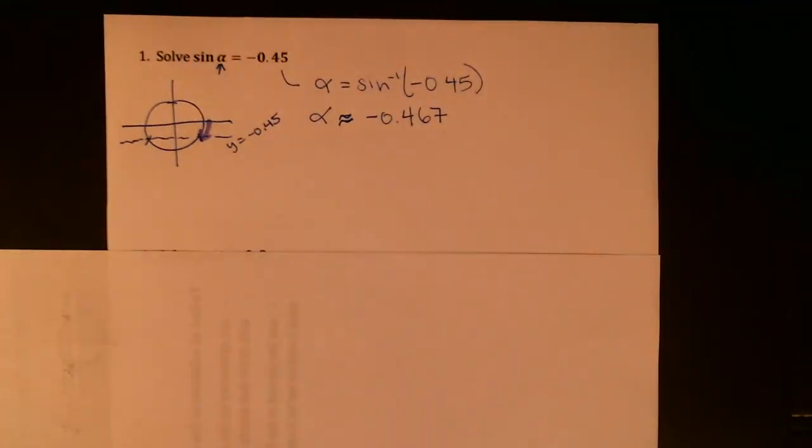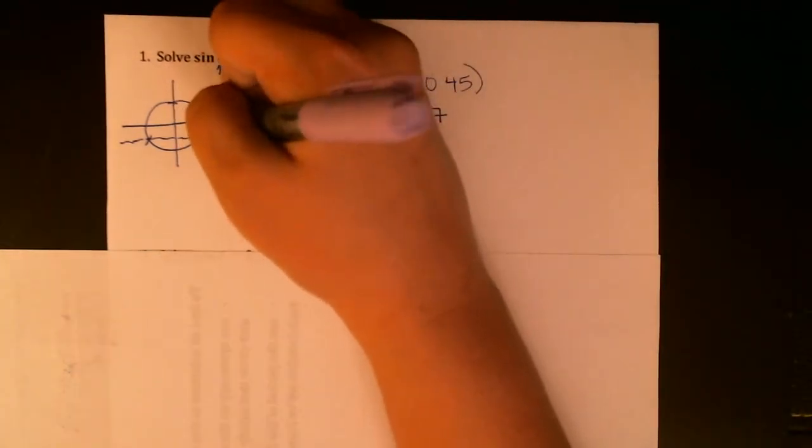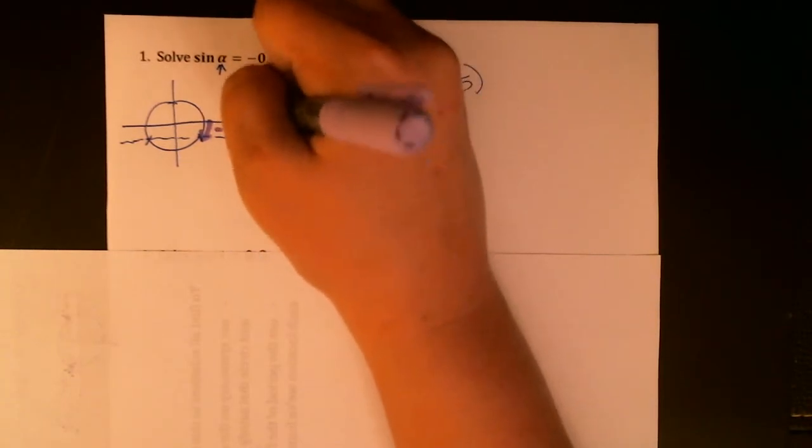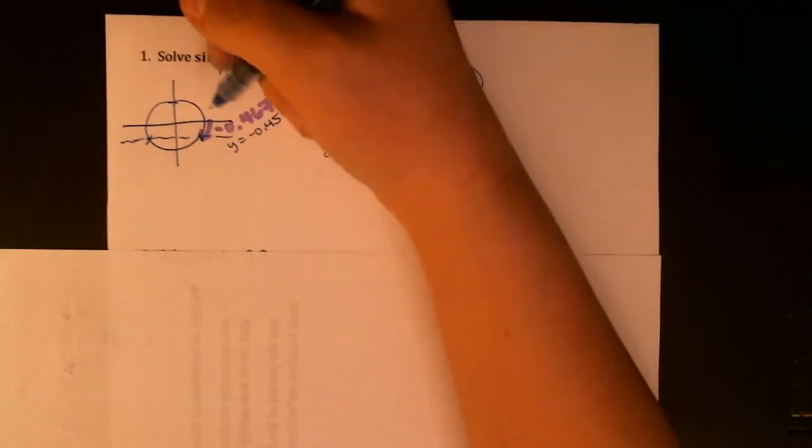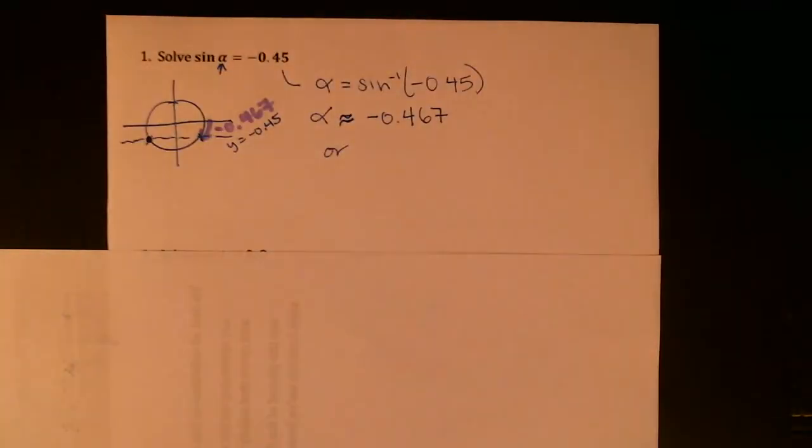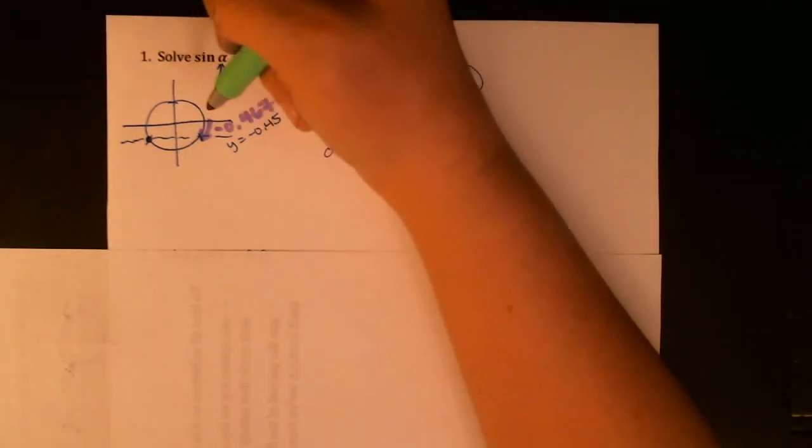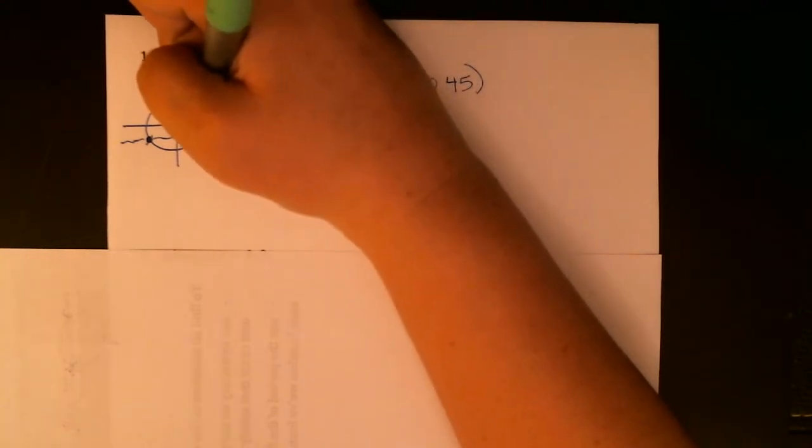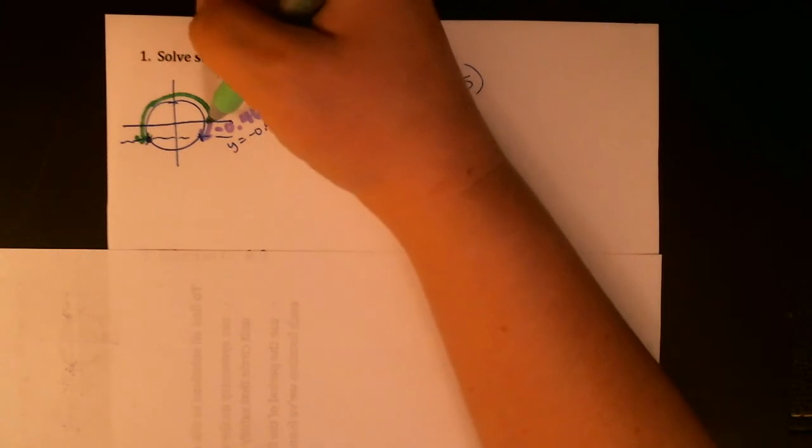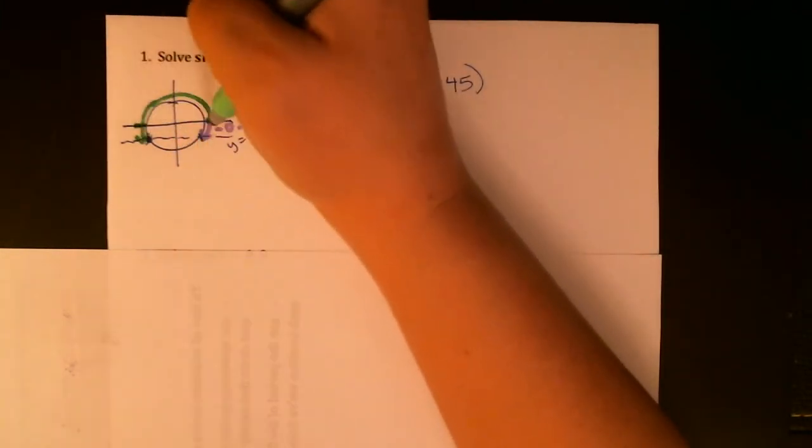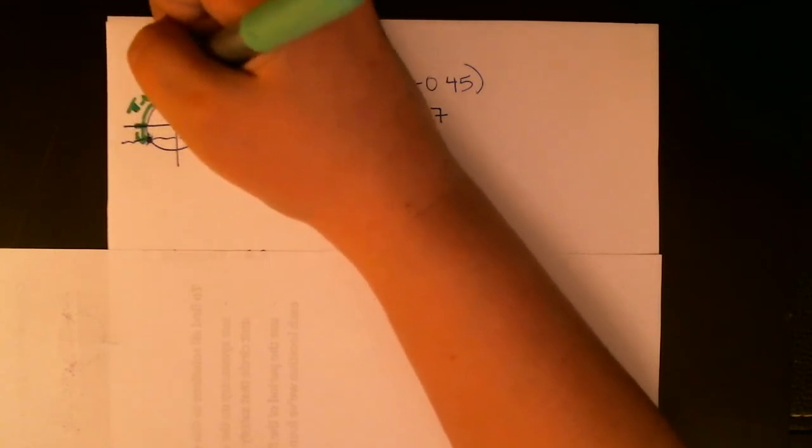So for starters, you want to ask yourself which arc length you found. We've got a small negative arc length, so that's going to be the one that lands us at the point in quadrant four, negative 0.467. This is where the symmetry comes into play. We also need to find an arc length that lands at this point over here, and your calculator is not going to give you that one. Inverse sine will always give you an arc length between negative pi over 2 and pi over 2, and we have to know how to find the other one.